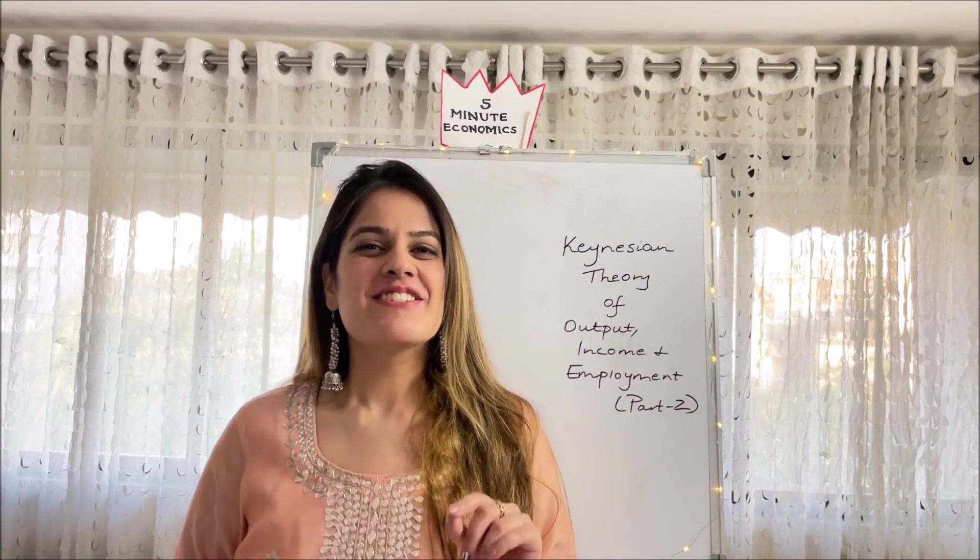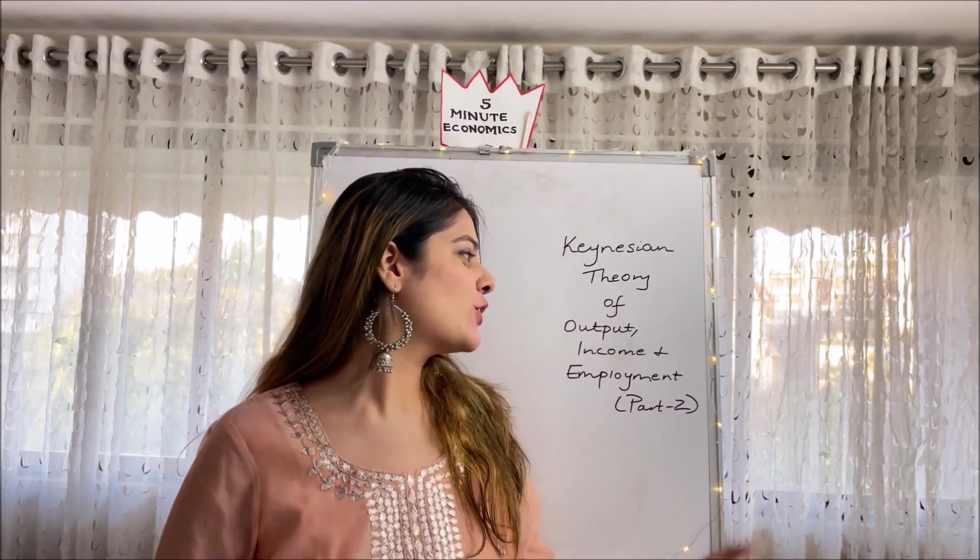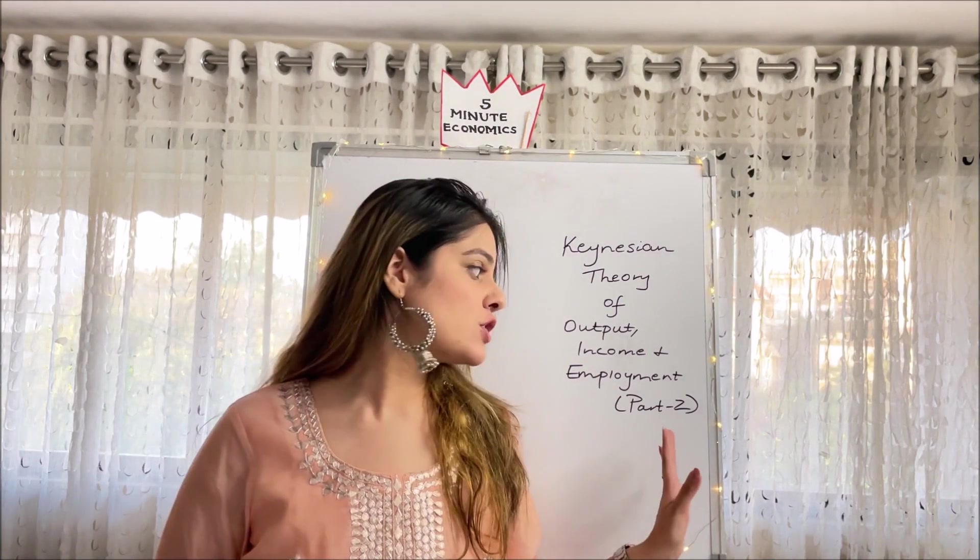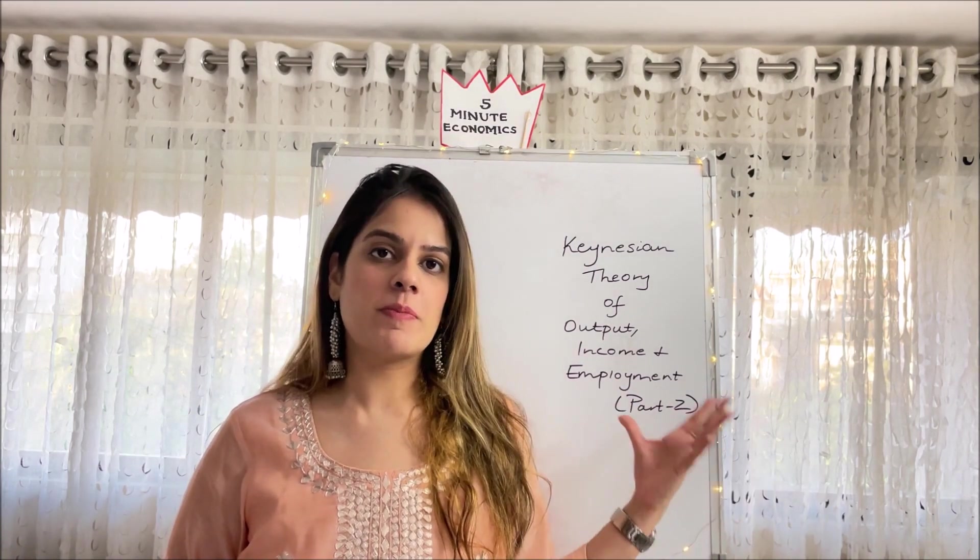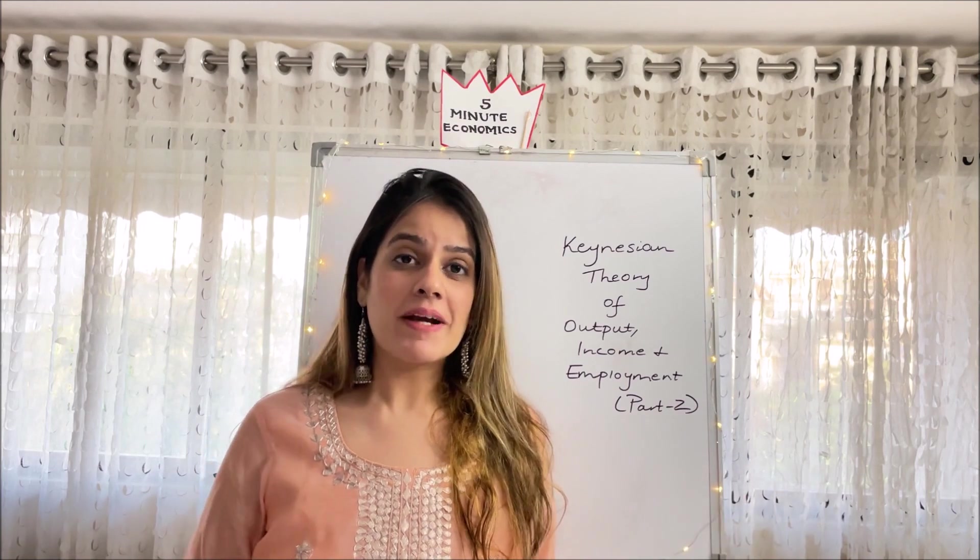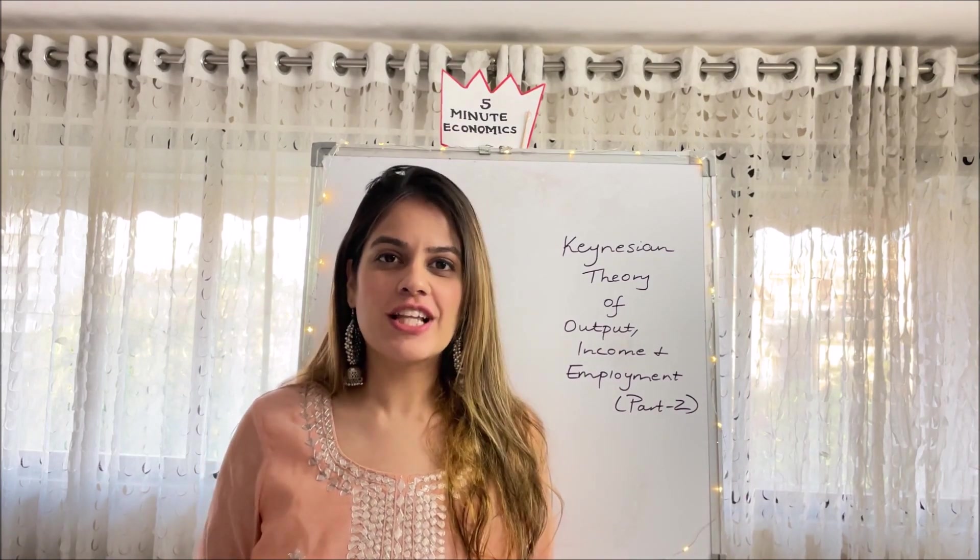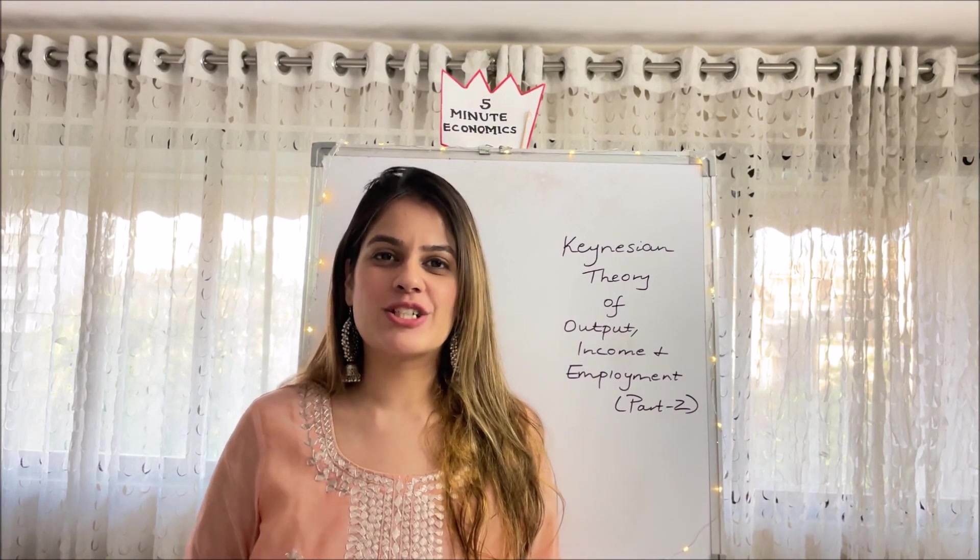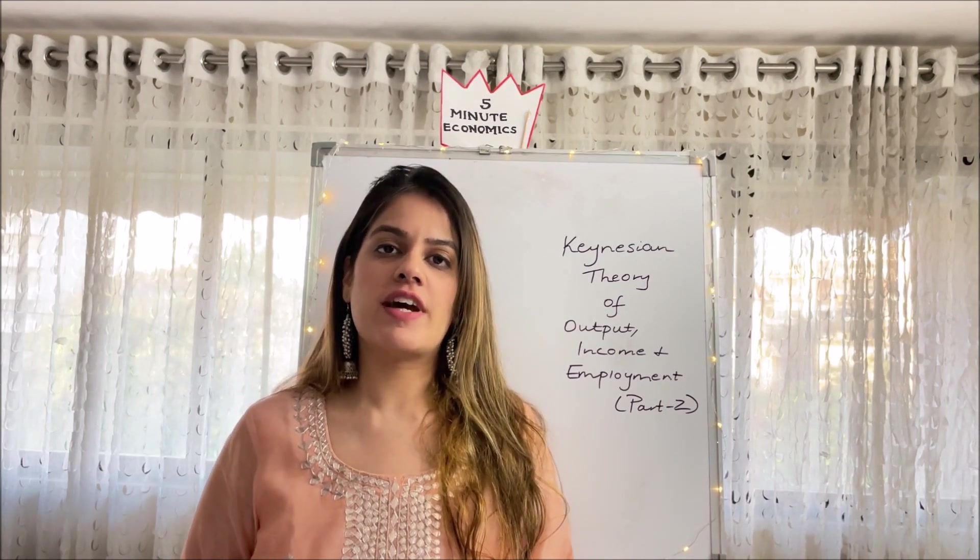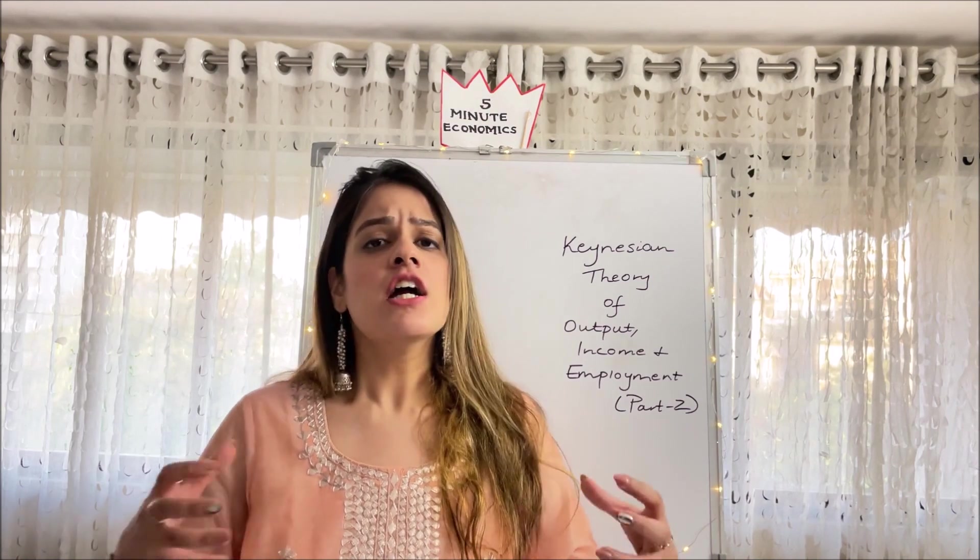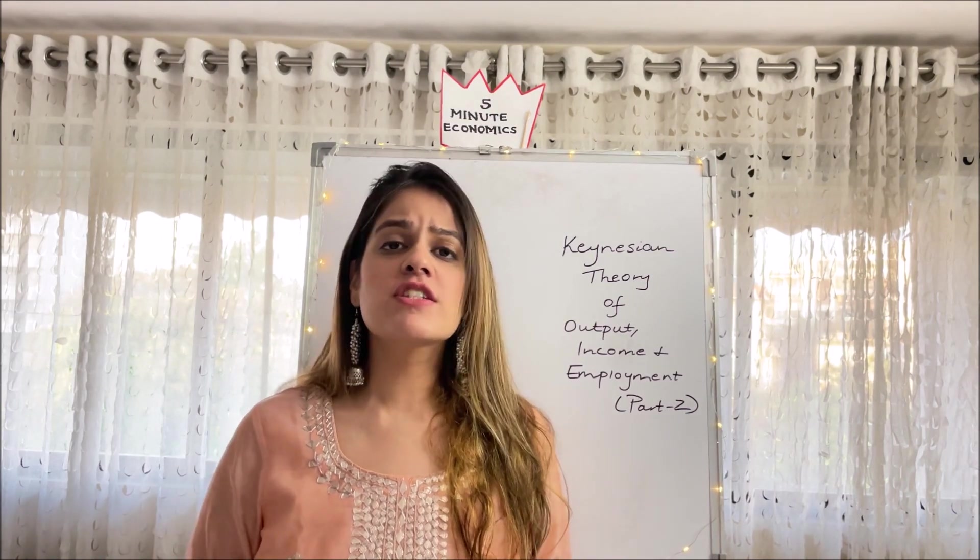So the topic for today is Keynesian theory of output, income and employment Part 2. Last week I came up with the first part of this particular theory and I'm expecting that you've already watched that. I'll attach its link in the comment section below. In this particular video I'll be talking about the significance of effective demand, remedies to remove unemployment, criticisms, as well as the relevance of the Keynesian theory.